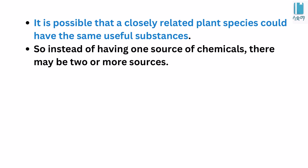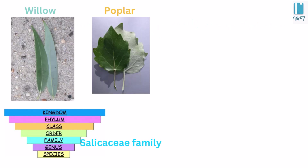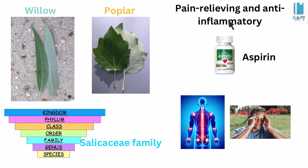So instead of having one source of chemicals, there may be two or more sources. For example, if we look at plants like popular mint, we have two or more species. If we look at the family, we look at similar species.